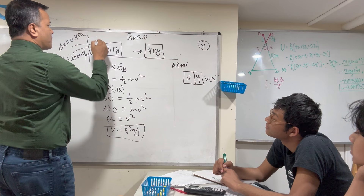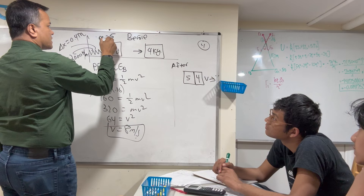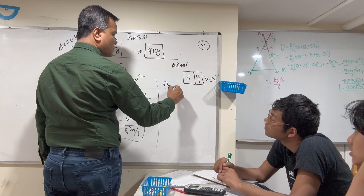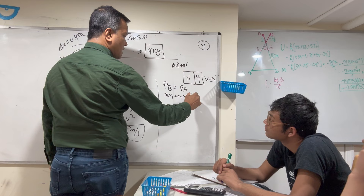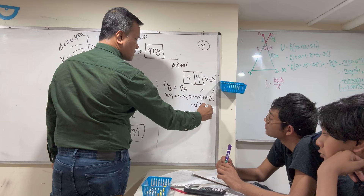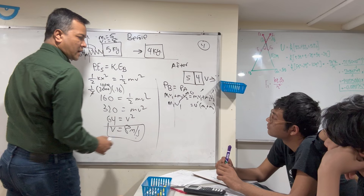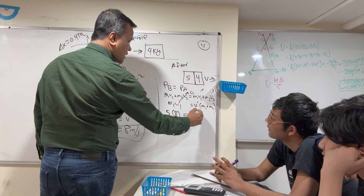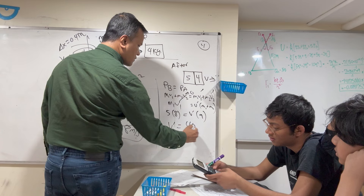So m1 = 5 and v1 = 8, giving total momentum = 40 before. Using conservation of momentum: m1·v1 + m2·v2 = (m1 + m2)·v'. The two blocks combine, and m2·v2 = 0. So 40 = 9 × v', giving v' = 40/9 ≈ 4.44 meters per second.